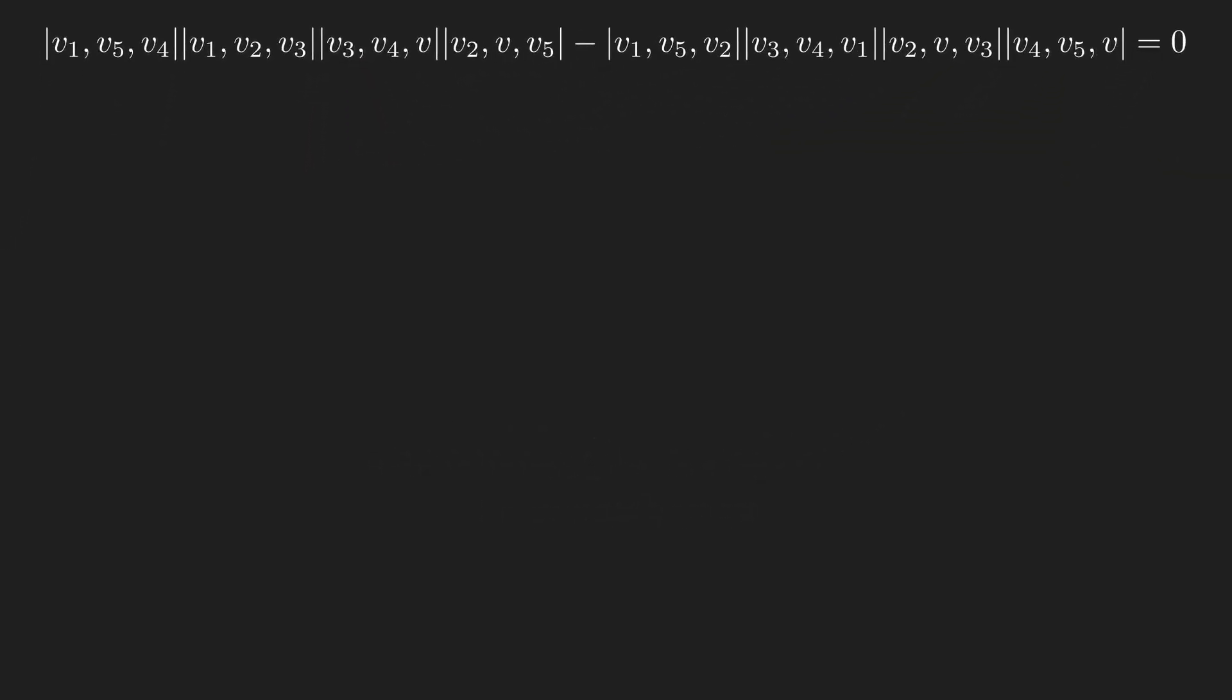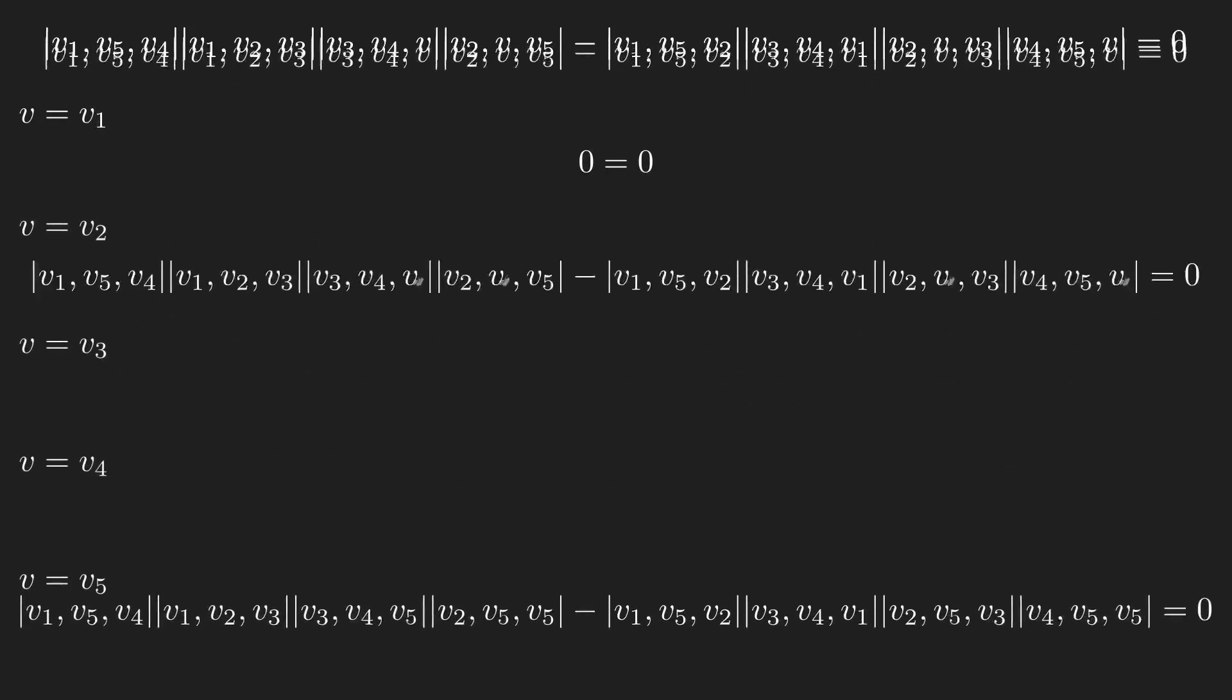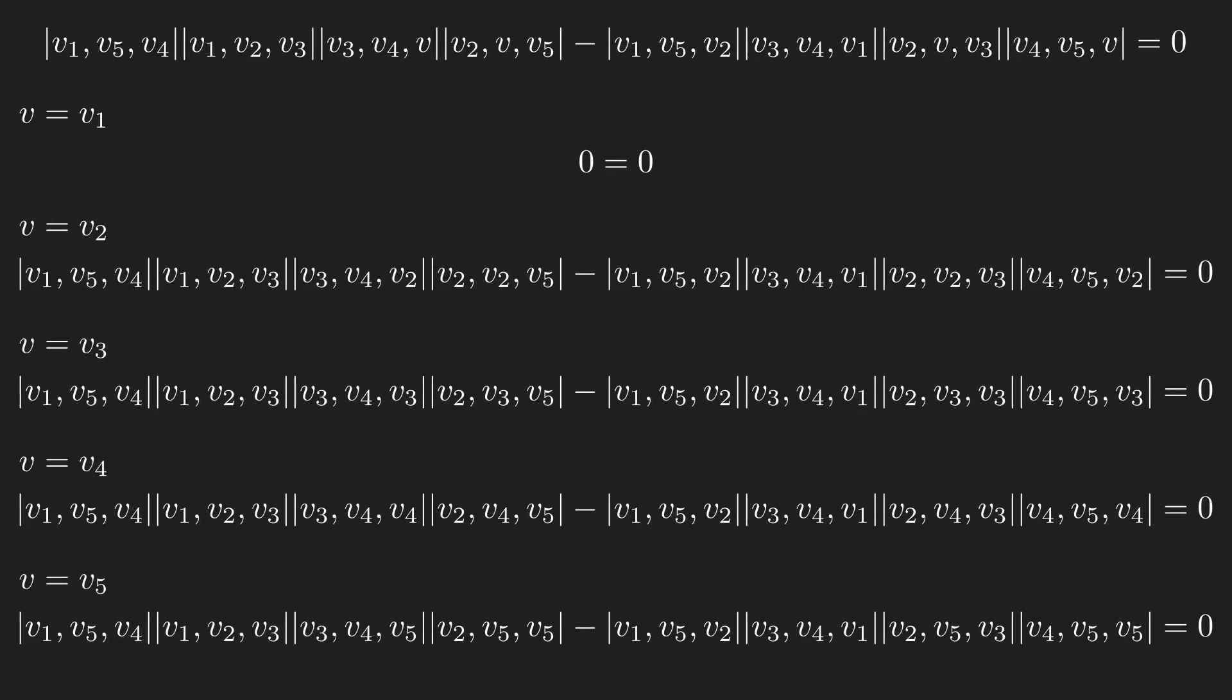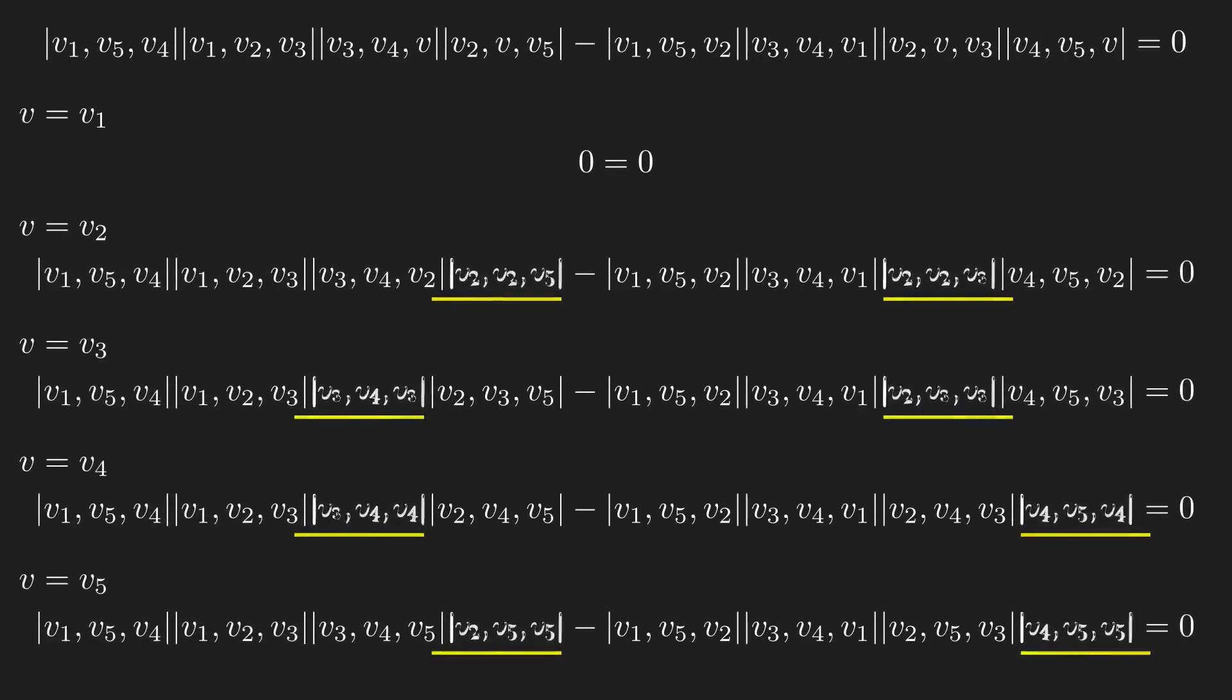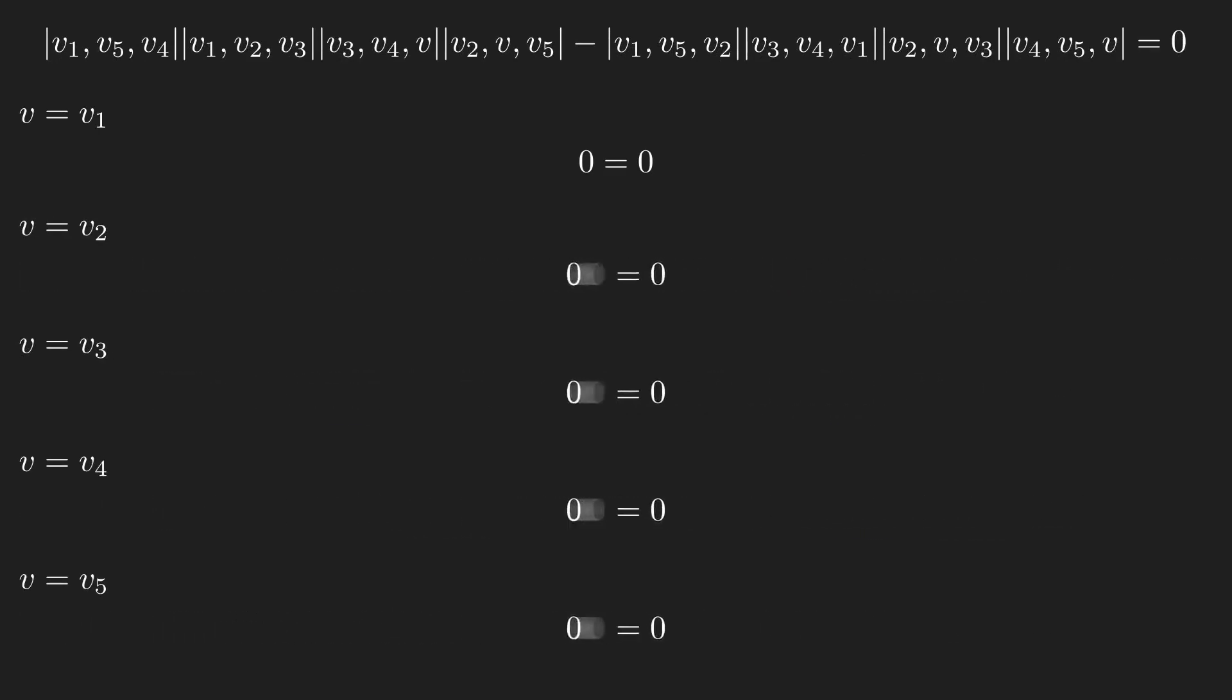Next, I'll check what happens if the plotting vector equals vector 1. After some rearranging, the left side of the equation simplifies to 0, so vector 1 is a solution to the equation. Then, I'll check the same thing for the remaining four vectors. These four cases also satisfy the equation. This means that I know that the graph of the equation will intersect vectors 1 through 5.